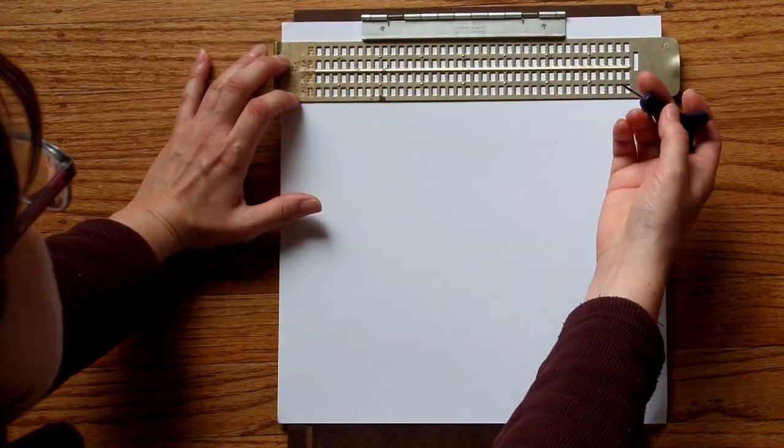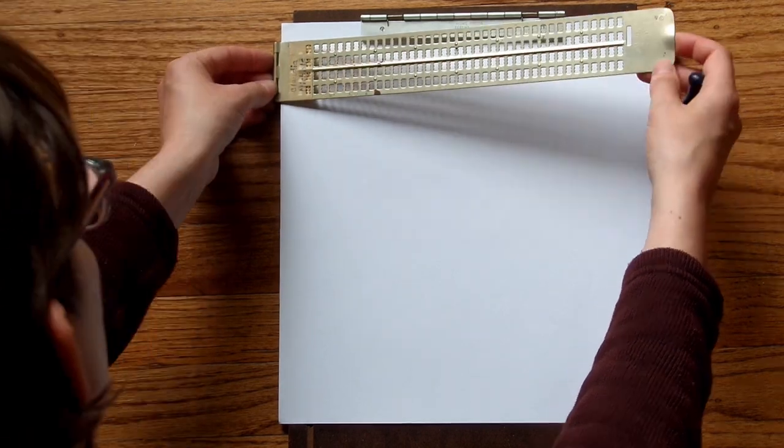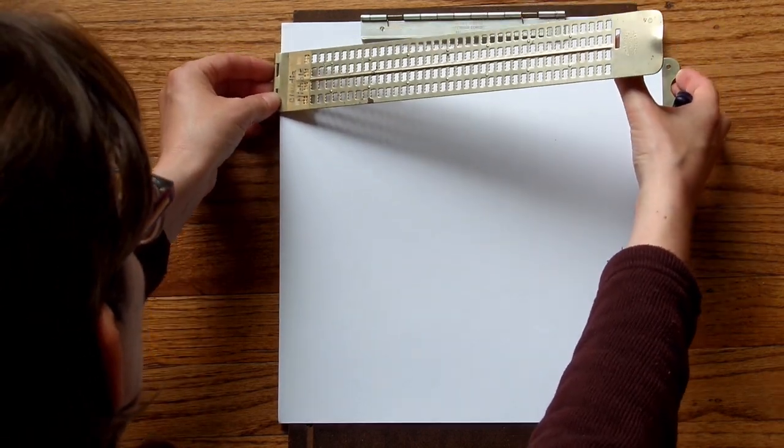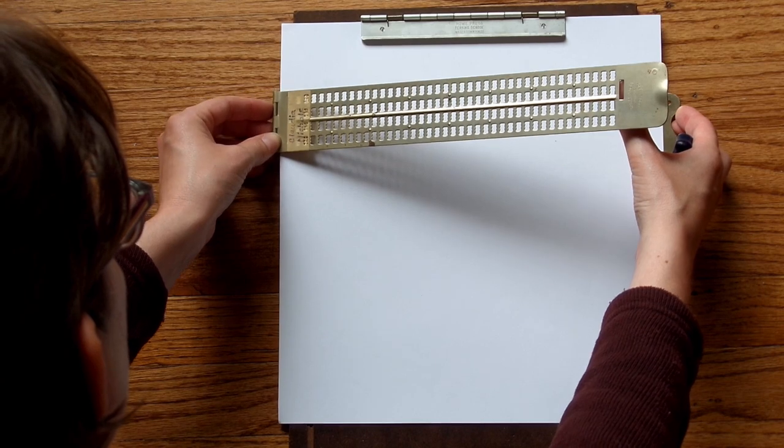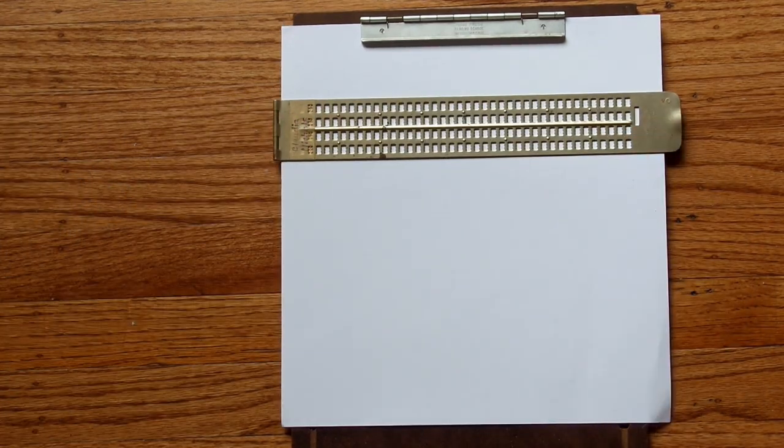Take my stylus, punch out the braille, and when I'm ready to move down four more lines, I lift up the slate, wait for it to sink into the next two holes, and just inch my way down the page.